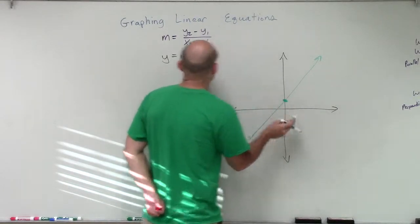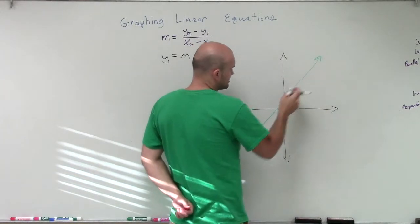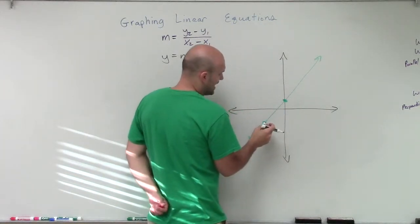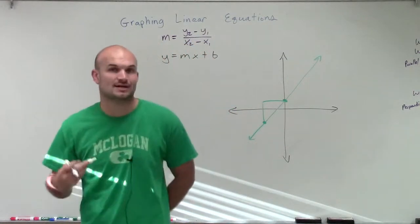so far what we've talked about is we talked about there's two important points. There's our y-intercept, which we represent by our value of b. And there's also our slope, which is the change in our y-coordinates to our change in our x-coordinates between any two points on our line.